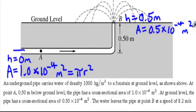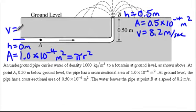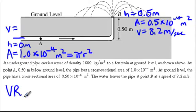We also know something else about point B: the velocity at point B, which is 8.2 meters per second. There is one glaring difference between point A and point B — they haven't given me the velocity at point A, and that's something I'm going to try to find. But before we do that, we're going to try to find the volume rate of flow.